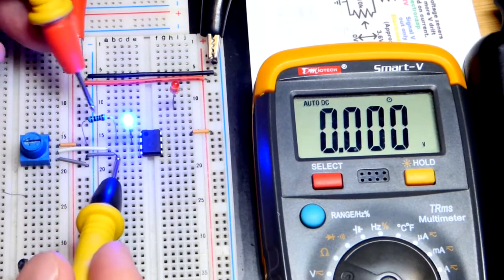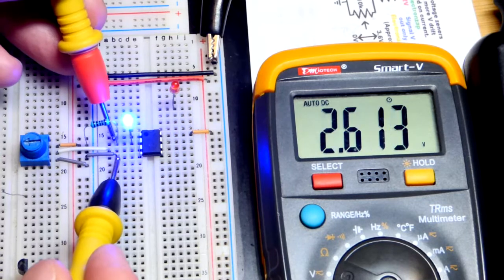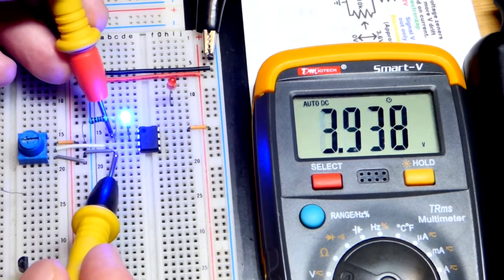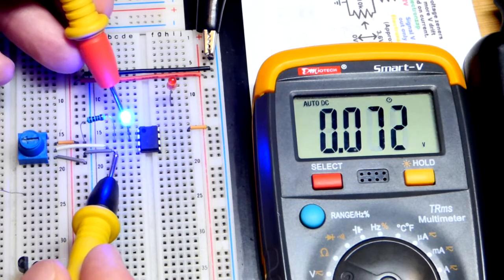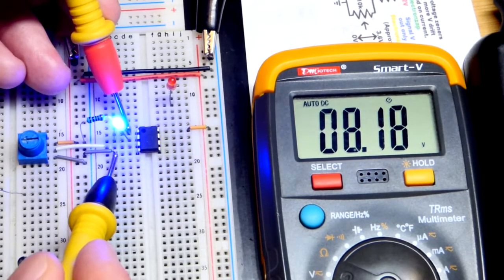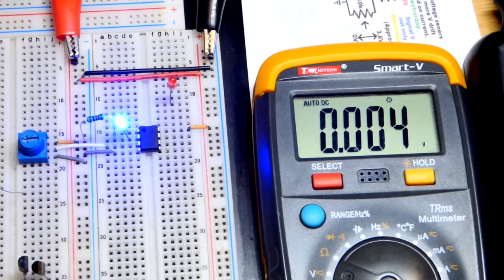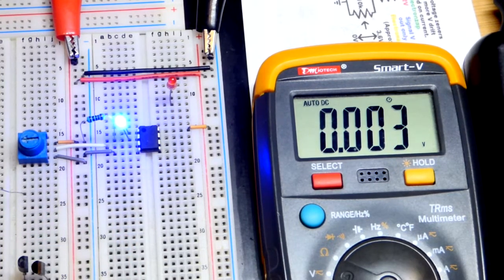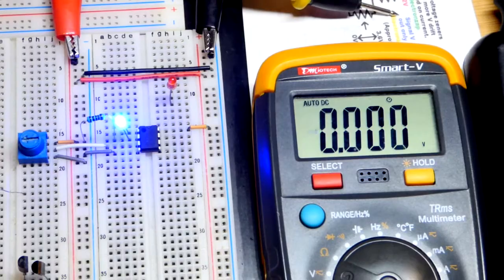You'll see that we still have at the inverting input 5 volts. And if I go up to the output you can see now we need 8 volts right there, a little bit more because the blue LED needs a little bit more voltage to get 5 milliamps of current through it.